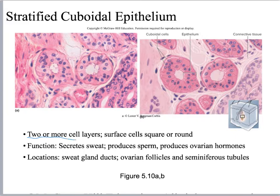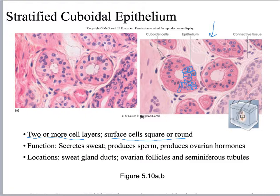Now let's look at stratified cuboidal — stratified means two layers of cells, and both the apical and the basal layers are going to be square to round in shape. Looking at the drawing, you can see that the basal cells and the apical cells are roughly about the same size. It's not a very thick layer, and each row tends to be about the same height. What's interesting is part of this image is simple cuboidal, but over here it's gone toward stratified cuboidal — this is a very common occurrence where a structure transitions from one tissue type to another.